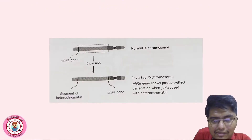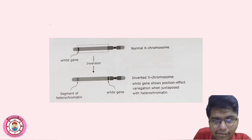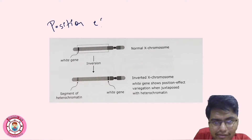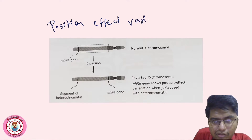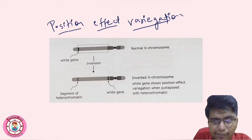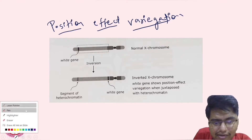We will see this example here: Position Effect Variation, also known as PEV. This was first described in Drosophila melanogaster. So this is a normal X chromosome.